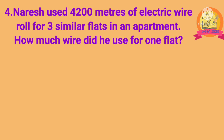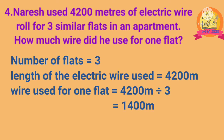Fourth problem: Naresh used 4200 m of electric wire roll for 3 similar flats in an apartment. How much wire did he use for 1 flat? Solution: number of flats is 3. Length of the electric wire used is 4200 m. Wire used for 1 flat is obtained by dividing 4200 m by 3. After dividing, we get 1400 m. Therefore, wire used for 1 flat is equal to 1400 m.